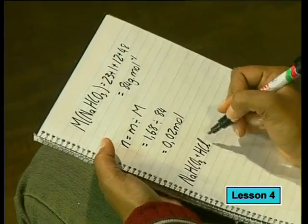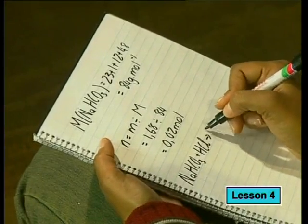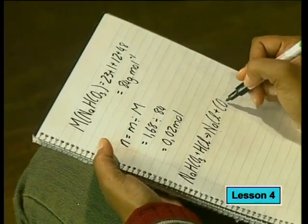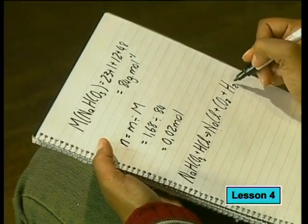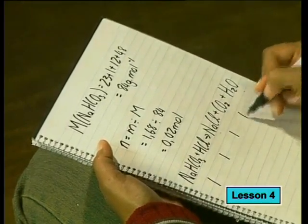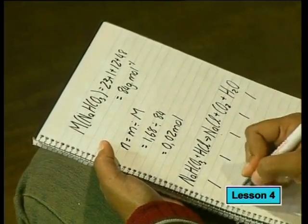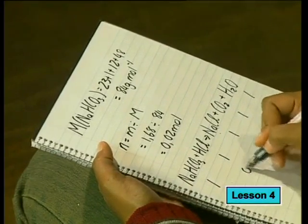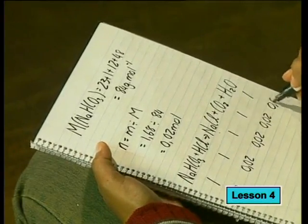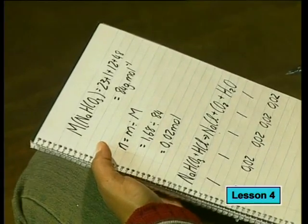Next we need to do some calculations. We are using 1.68 grams of sodium bicarbonate. The molar mass of sodium bicarbonate is 84 grams per mole, so the number of moles present is 0.02 moles. From the balanced equation, 1 mole of sodium bicarbonate reacts with 1 mole of hydrochloric acid to give 1 mole of sodium chloride, 1 mole of water and 1 mole of carbon dioxide. Because the ratio is 1:1, 0.02 moles of sodium bicarbonate will require 0.02 moles of acid to give 0.02 moles of each of the products.